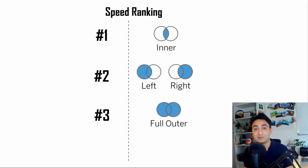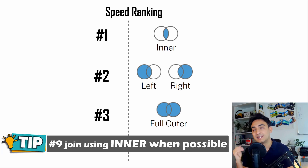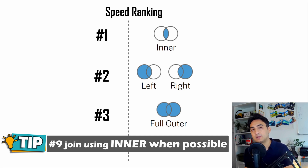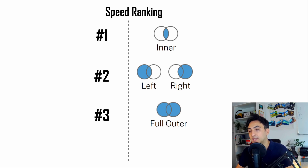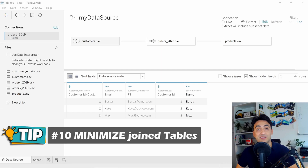If you still want to combine data using joins, you have four different methods. Here is my ranking. Number one is inner join — you get the best performance because Tableau stores only the matched records in the data source, giving you a small data source. Number two is left and right joins, where Tableau loads one table completely and only the matched records from the second. Last is full outer join, which has the worst performance because Tableau loads all records from both tables, making the data source very large.